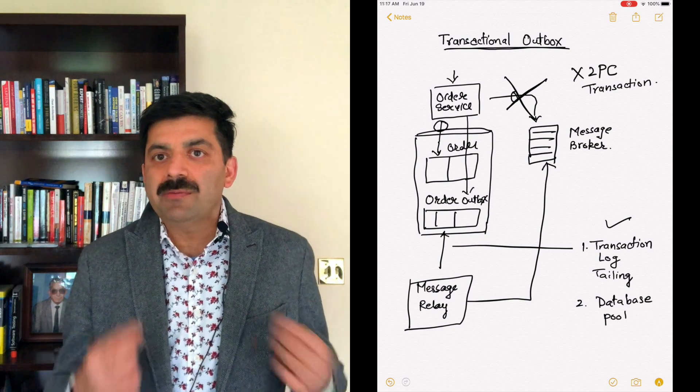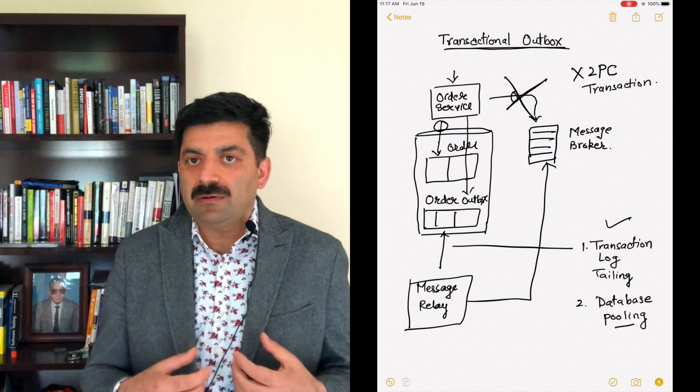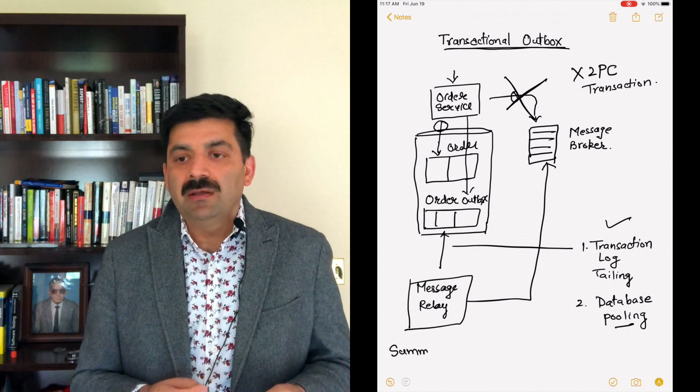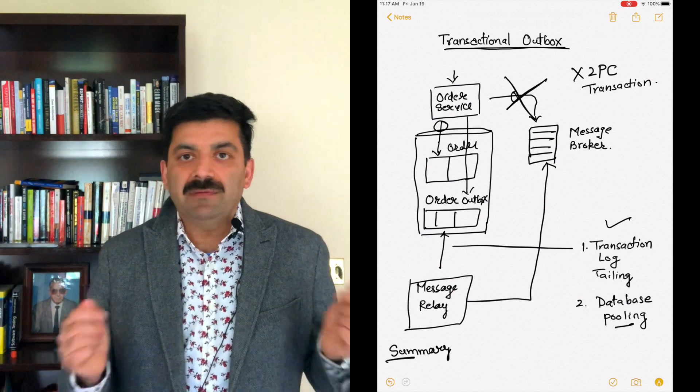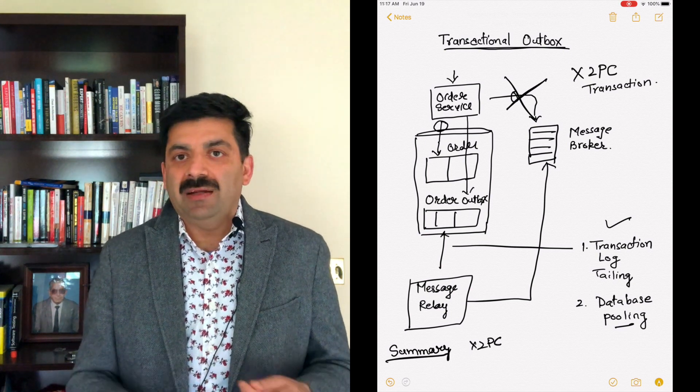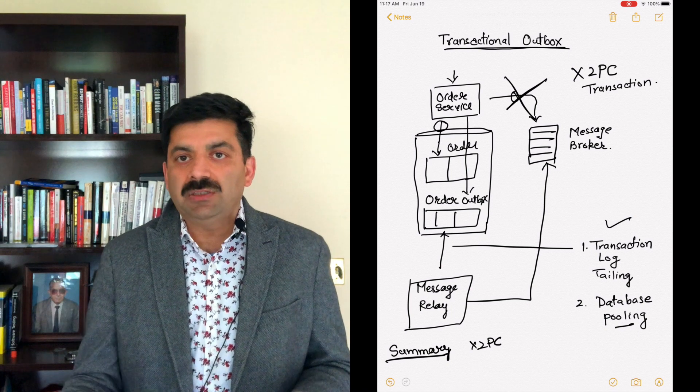If you are using this pattern, try to implement transaction log trailing. To summarize: whenever a service needs to write a message to the database and also needs to push this event to a message queue, we can use transactional outbox pattern to solve this problem.